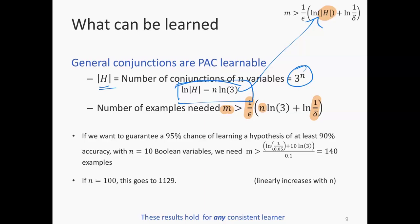A Zoom question: is there any need to prove polynomial for variables other than n? That's right — the 1/epsilon and 1/delta parts just come for free. The fact that it's polynomial in size of h also comes for free from the theorem. So the only thing we need to prove is that the log of the size of the hypothesis space is polynomial in n. If the log of the hypothesis space is polynomial in the dimensionality, we are PAC learnable. If it's not polynomial, then it's not PAC learnable.